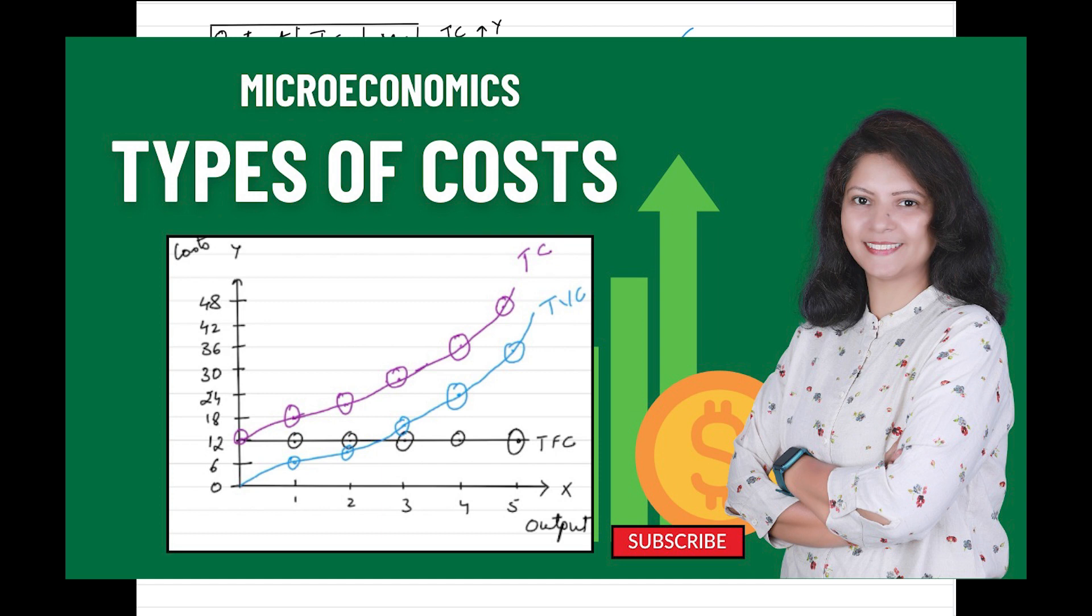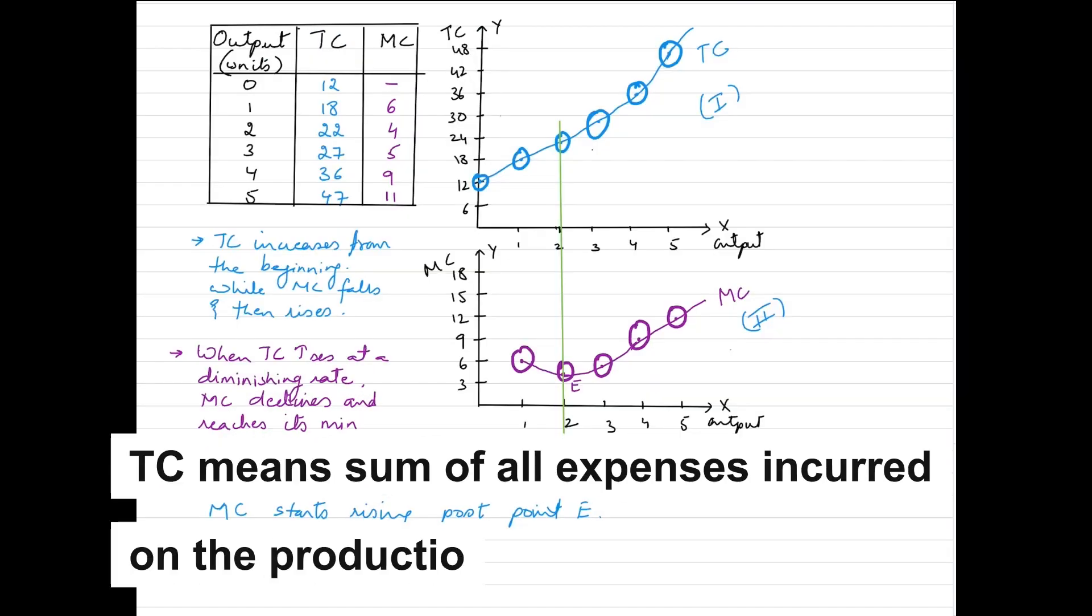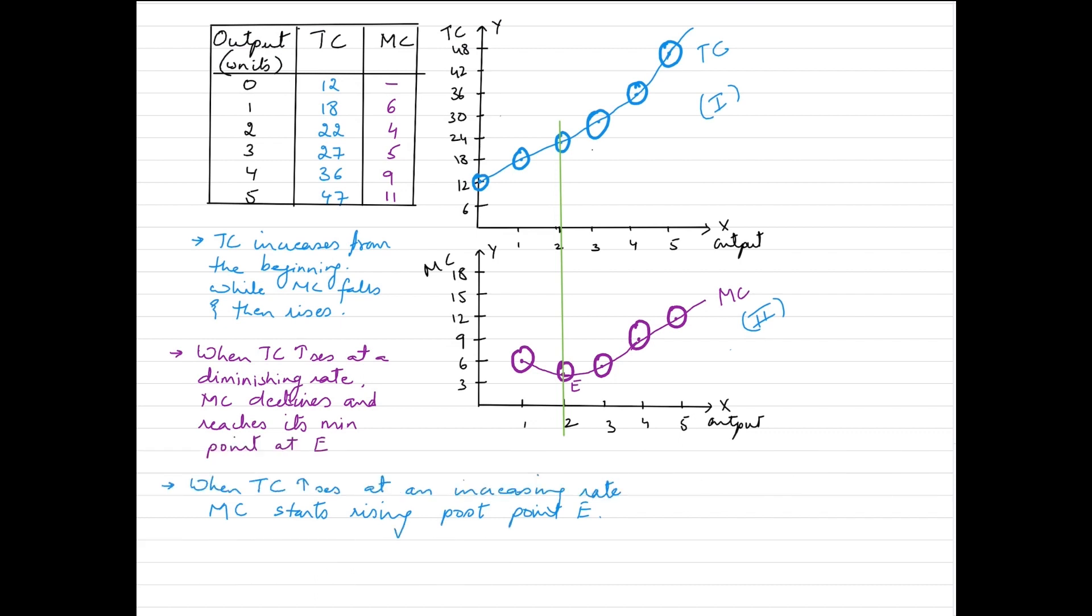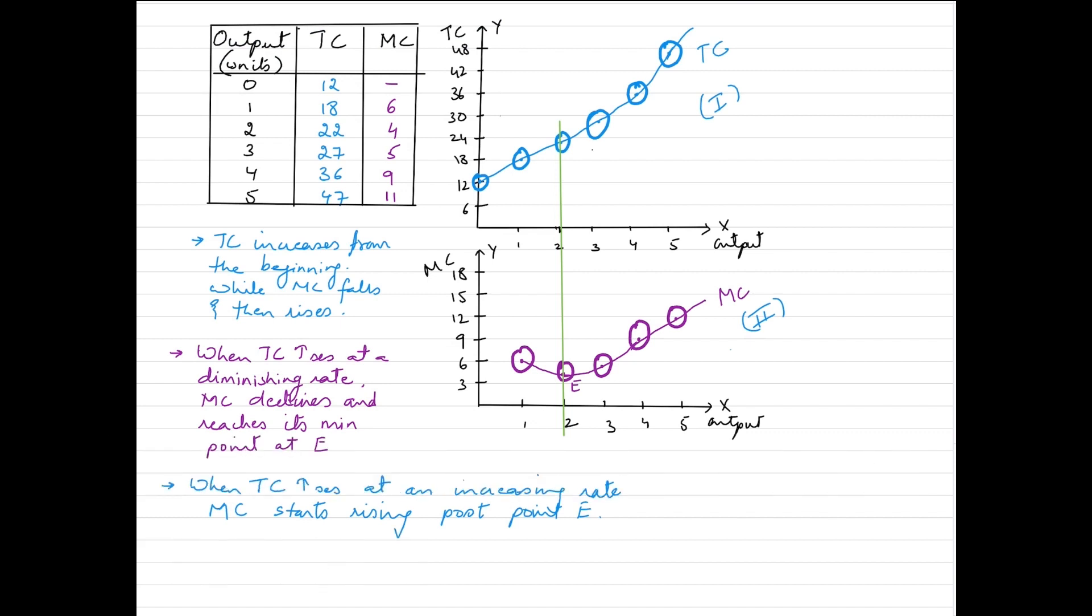When we talk about total cost, it's basically the sum of all the expenses that are incurred by businesses during the production process. Marginal cost, on the other hand, refers to the cost incurred for producing one additional unit of output. The relationship can be understood through this schedule and these diagrams.